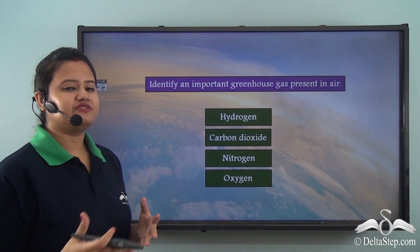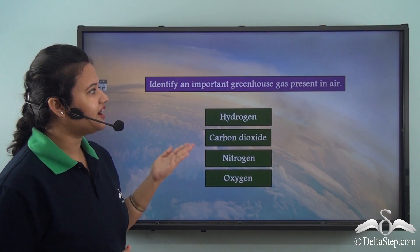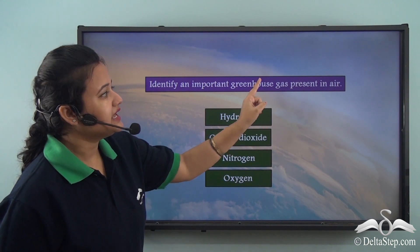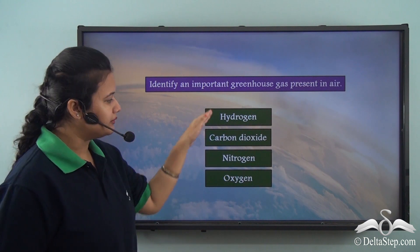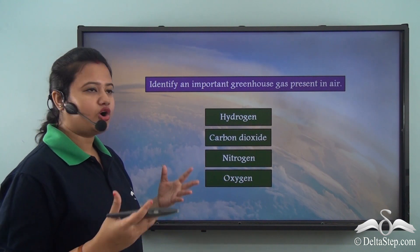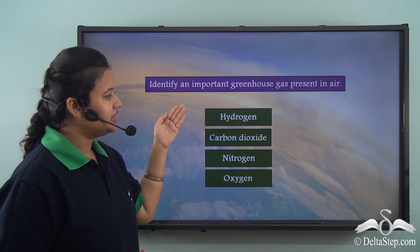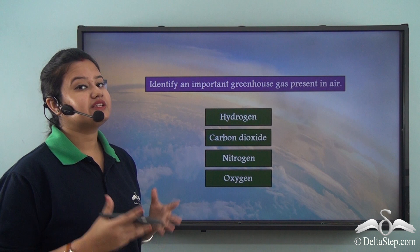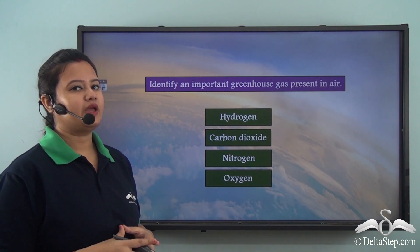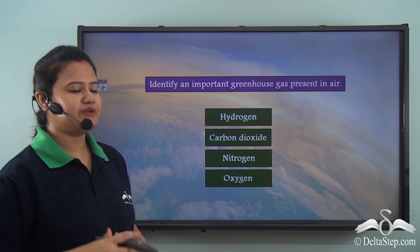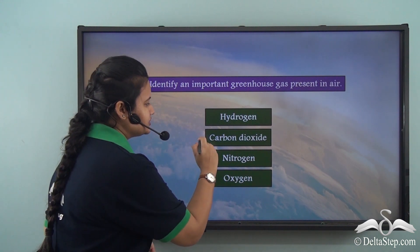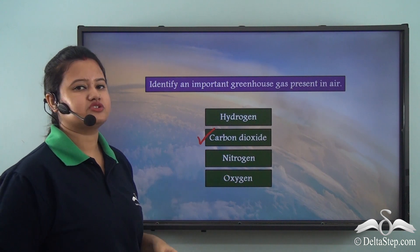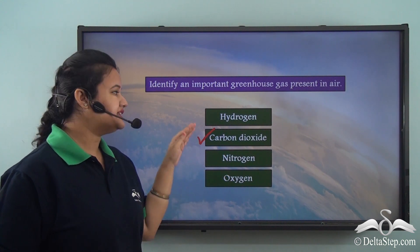Before proceeding with our lesson, let us identify an important greenhouse gas present in air from these options: hydrogen, carbon dioxide, nitrogen, and oxygen. Which do you think is the correct option? We know carbon dioxide is an important greenhouse gas among all these options, so the correct answer is carbon dioxide.